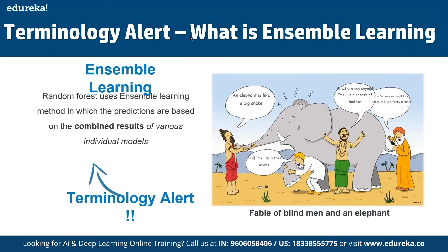Random forest uses the ensemble learning method where predictions are based on combined results of multiple individual models. For example, consider blind men describing an elephant — one says it's like a snake, another says it's like a tree's trunk, another says it's like a piece of leather, and another says it's like a furry mouse. Each gives a different input, and combining these different perspectives gives the full picture.